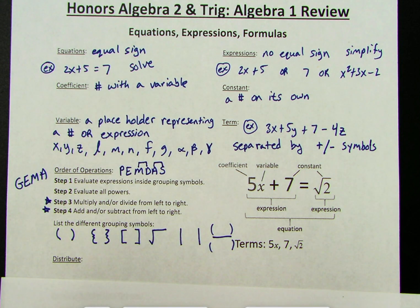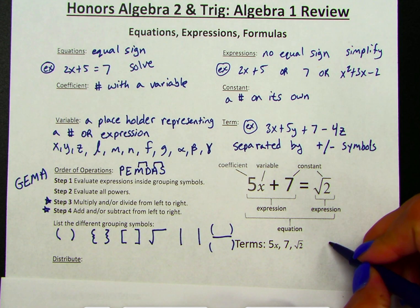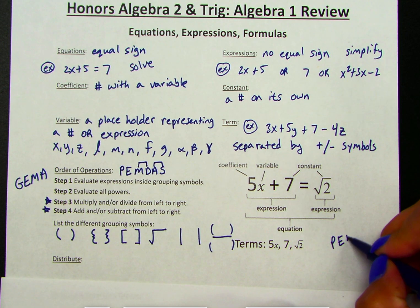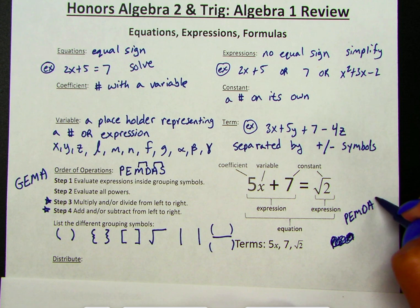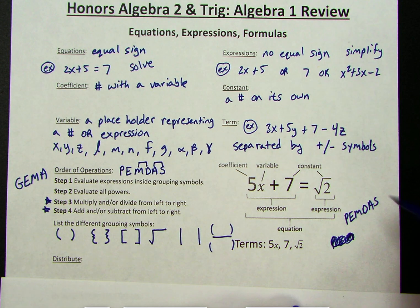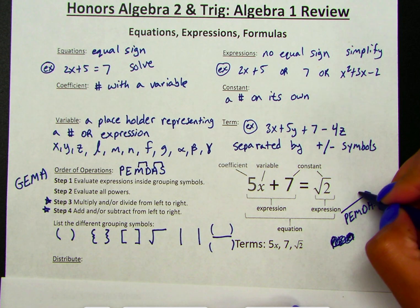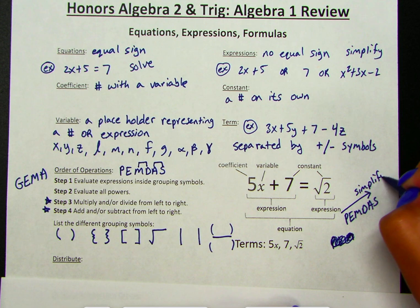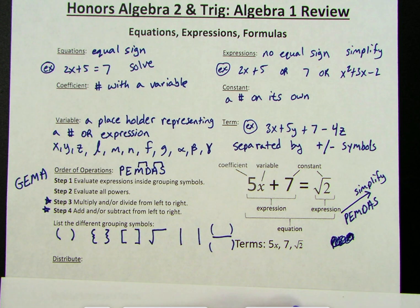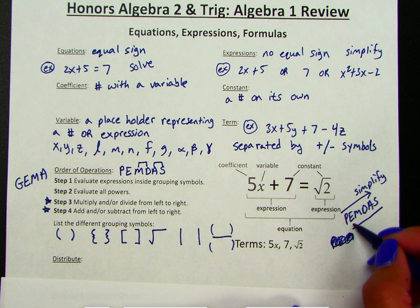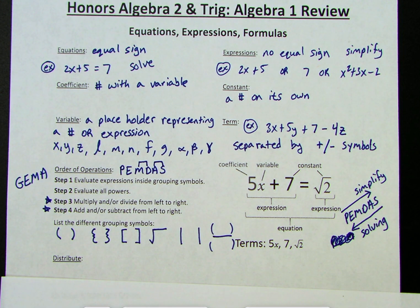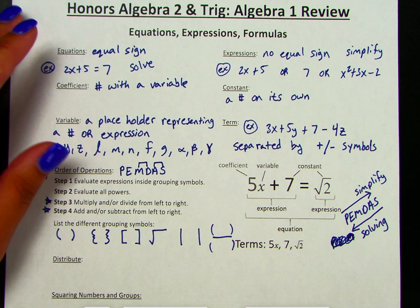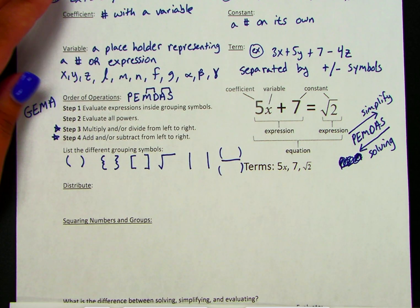With order of operations, when we are simplifying we go through PEMDAS in order. When we are solving, we are undoing the order of operations, so we go through the process backwards. That's an important thing to remember as we start getting into simplifying and solving. Also along with order of operations, we have distributing.